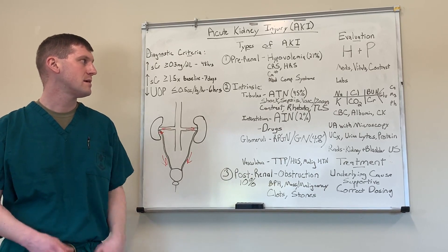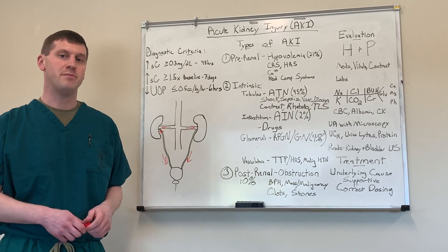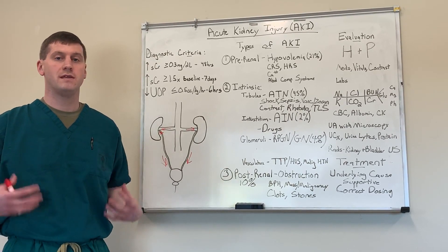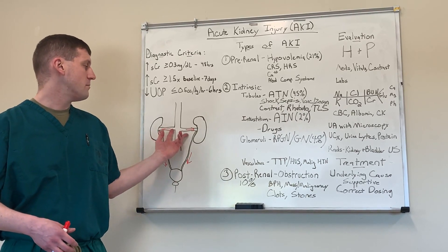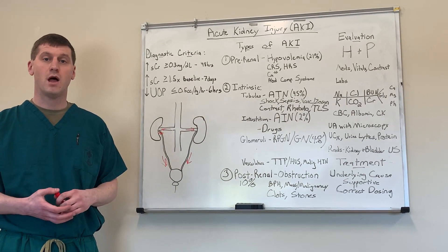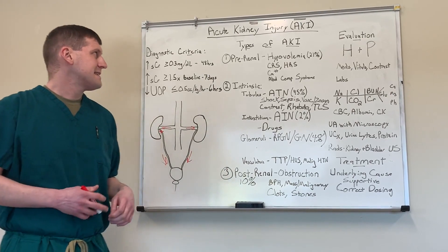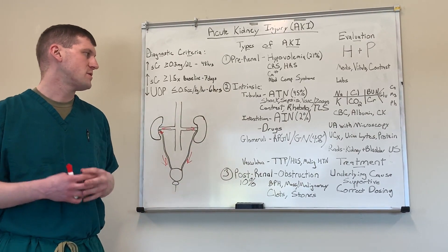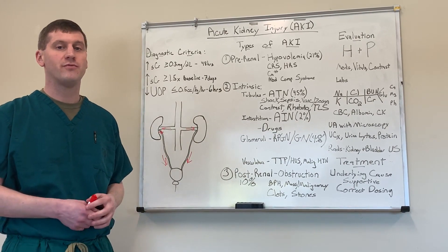Other things that can cause a pre-renal state would be abdominal compartment syndrome, which we see in acute abdomen patients. This causes compression not only on the kidneys and other abdominal organs but also on the vasculature, so the renal arteries are not able to deliver blood as well as they could.